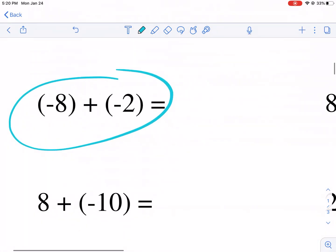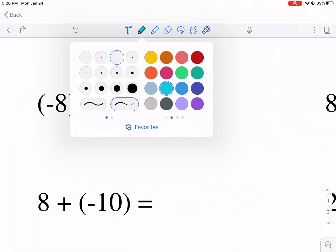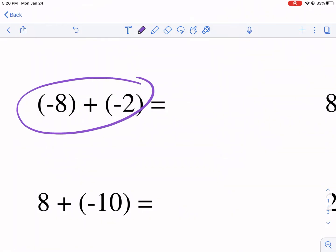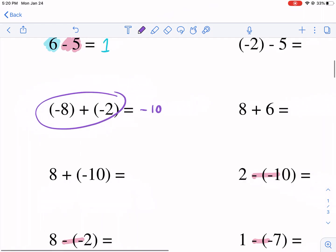These two guys are on the same team. I'm going to change to purple. So we don't get the team alliances mixed up with the colors. They're on the same team. They're both on the negative team. So they get stronger, negative 10.